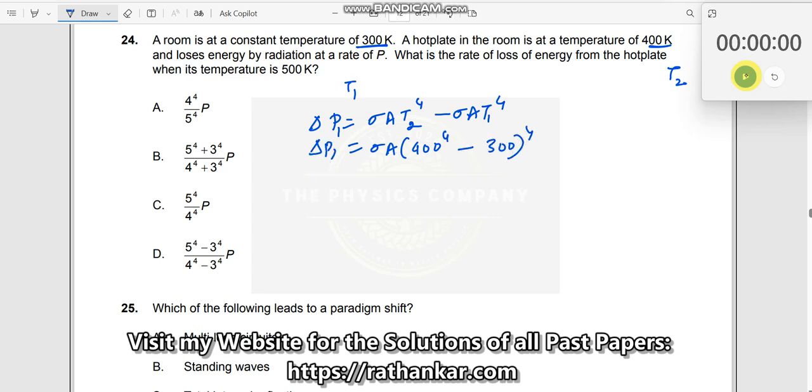This is your delta P1, and delta P2 similarly I can write as sigma A times, now the temperature of the hot plate is 500, so it should be 500 to the power of 4, but the room temperature is not changing, 300 to the power of 4.